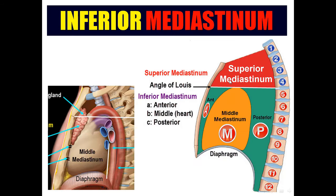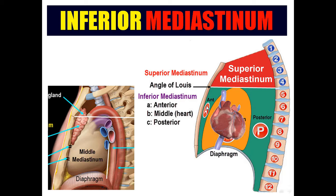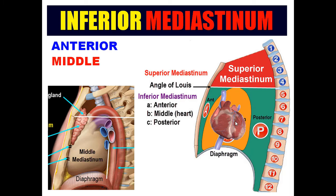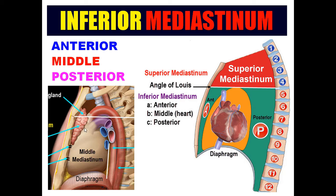The inferior mediastinum is the mediastinum below the level of the sternal angle. It is divided by the heart into three parts: anterior mediastinum (anterior to the heart), middle mediastinum (containing the heart and big vessels), and posterior mediastinum (between the heart and the vertebrae).